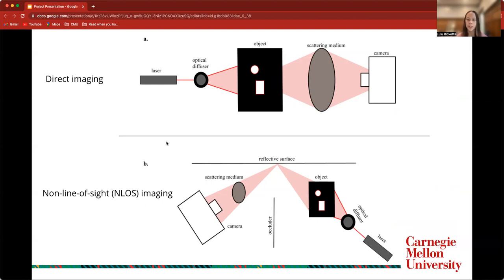So the direct imaging setup has applications in the medical field such as imaging blood cells through biological tissues, and the non-line of sight imaging has applications in things like the robotic sector to aid in seeing around corners or providing environmental cues that aren't available with traditional RGB imaging techniques.